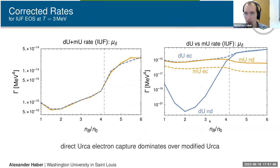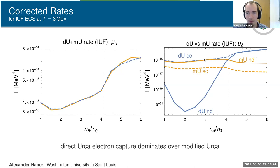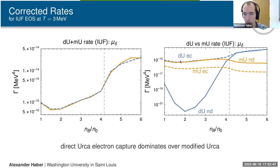An additional finding: contrary to common claims, at finite temperature direct Urca can dominate over modified Urca even below the direct Urca threshold for electron capture. At 3 MeV, thermal excitations are sufficient to pull particles out of the Fermi sphere deep enough to enable direct Urca electron capture at faster rates than modified Urca. For neutron decay, modified Urca does dominate below the threshold as expected — but for electron capture, direct Urca leads throughout.